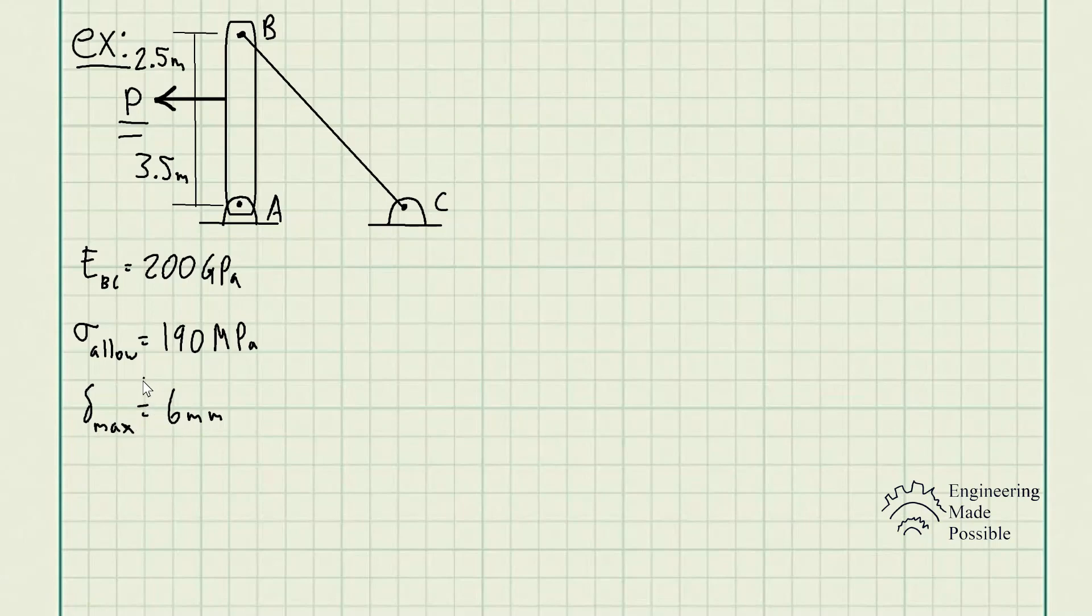In this case, we actually have two criteria that we must not exceed. So we will be solving the problems two times, one using this parameter and then the other using this, and then we'll compare the maximum force P that we would apply and make sure we do not exceed both of these. First off, doing a free body diagram solving for the tension in cable BC, TBC, we could just do the sum of moments with respect to A.